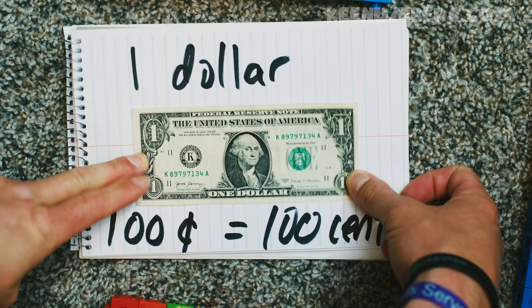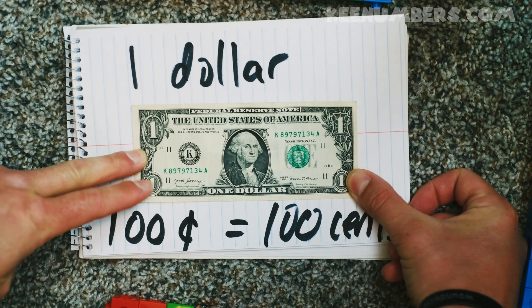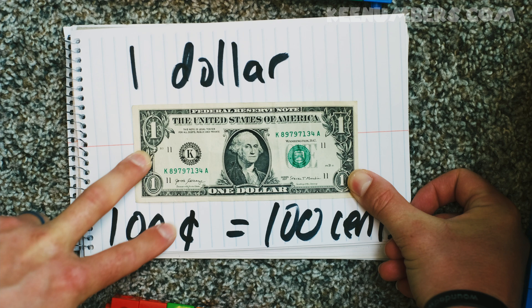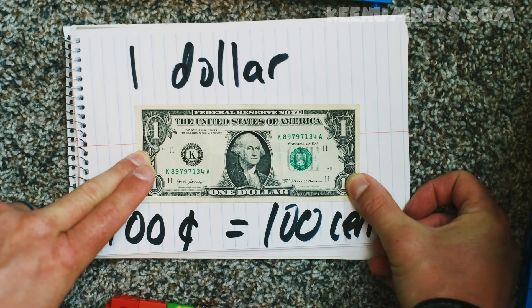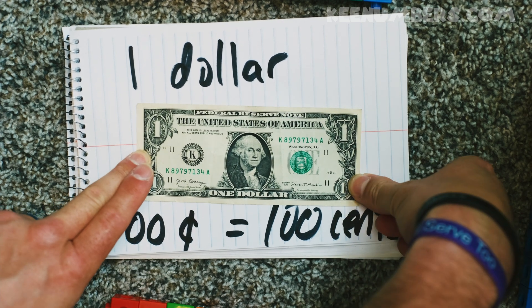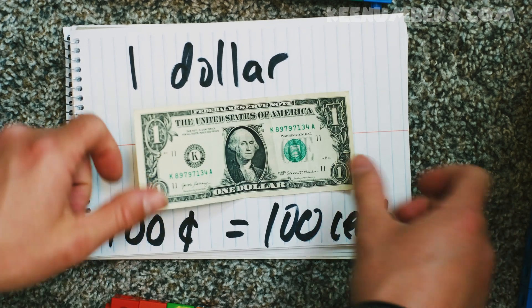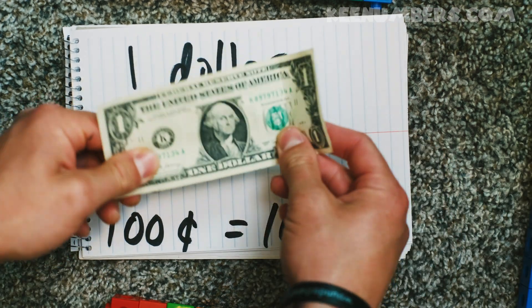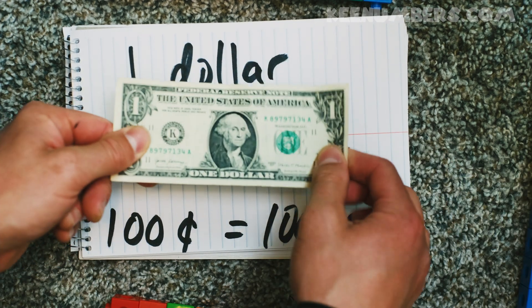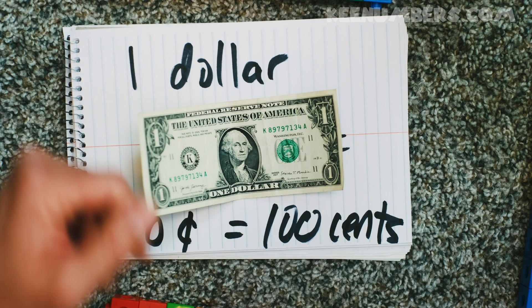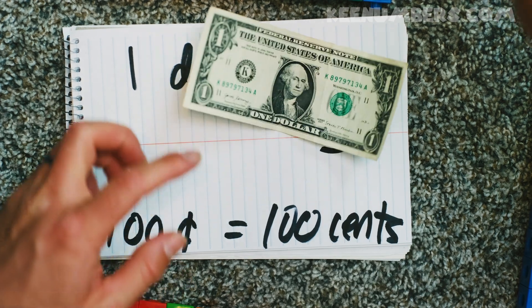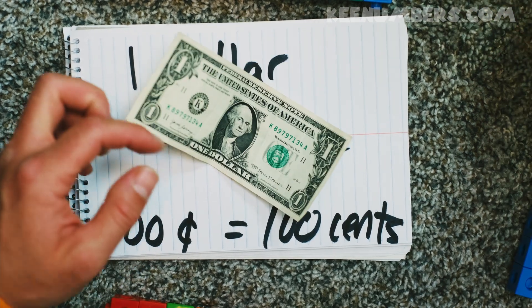One dollar — one hundred cents. Again, you write the C with a slash through it. That's the dollar bill. From here you can start adding these together — you can have the five dollar bill, that would be when you have five dollars.